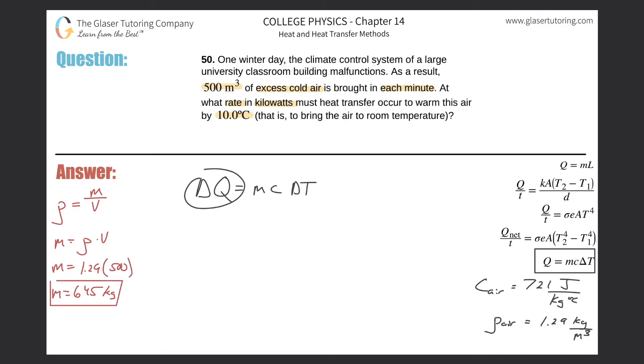All right. So now I can find the Q, right? Now I can find the change in heat energy or the heat energy necessary to warm it up. So this is 645 kilograms multiplied by the specific heat of air, which is 721, multiplied by that change in temperature of 10 degrees. And it's positive since we're going to warm it up, I guess, right? So this is 645 times 721 times 10, and that becomes now 4.65 times 10 raised to the 6, right? And that's in terms of joules.